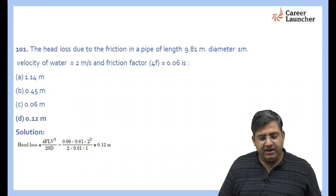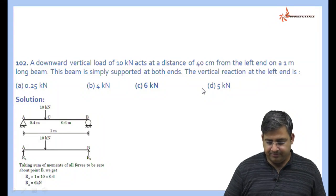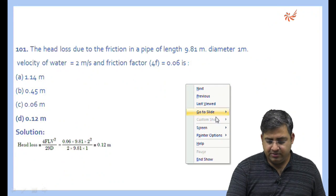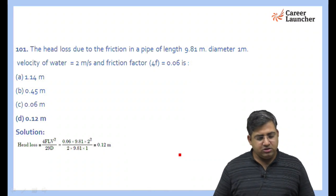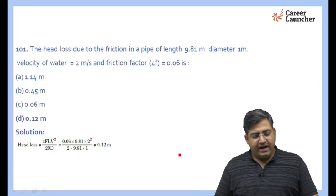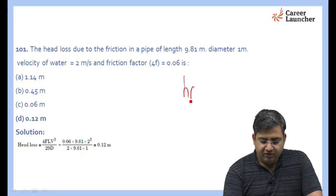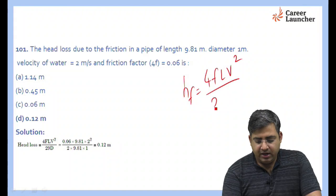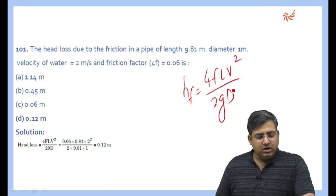Let us start with the head loss due to friction in a pipe of length 9.81 meters. The diameter is 1 meter, velocity of water is 2 meters per second, and friction factor is 0.06. HF will be equal to 4FLV² divided by 2GD, and when you substitute all these values you will get the answer.